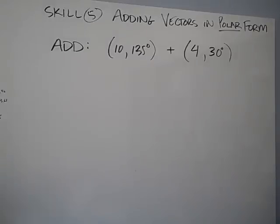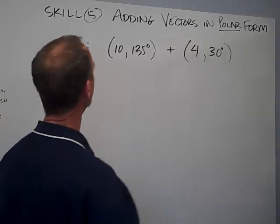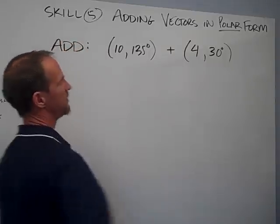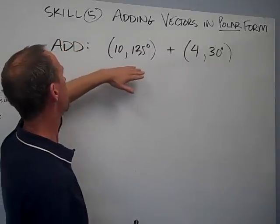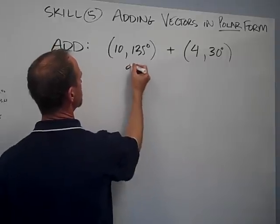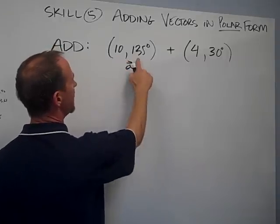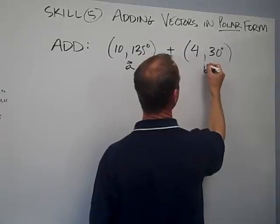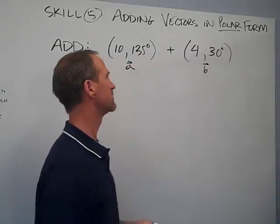We're back with our final specific skill, and that is adding vectors in polar form. We're going to do this by an example. Suppose we have two vectors: Vector A is 10 at 135 degrees, and Vector B is 4 at 30 degrees.